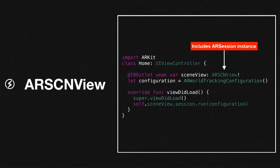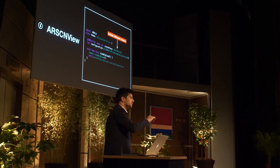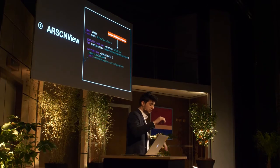Once you're done, go to your storyboard or your xib file, attach the outlet, then go to the viewDidLoad method and run the session passing the configuration as a parameter. Once you've done that you have nothing — you can run the app, you're gonna see the camera, you're gonna see the three-dimensional world, but there are no objects in this three-dimensional world yet. So you have to apply objects to the scene, and we're gonna do that.